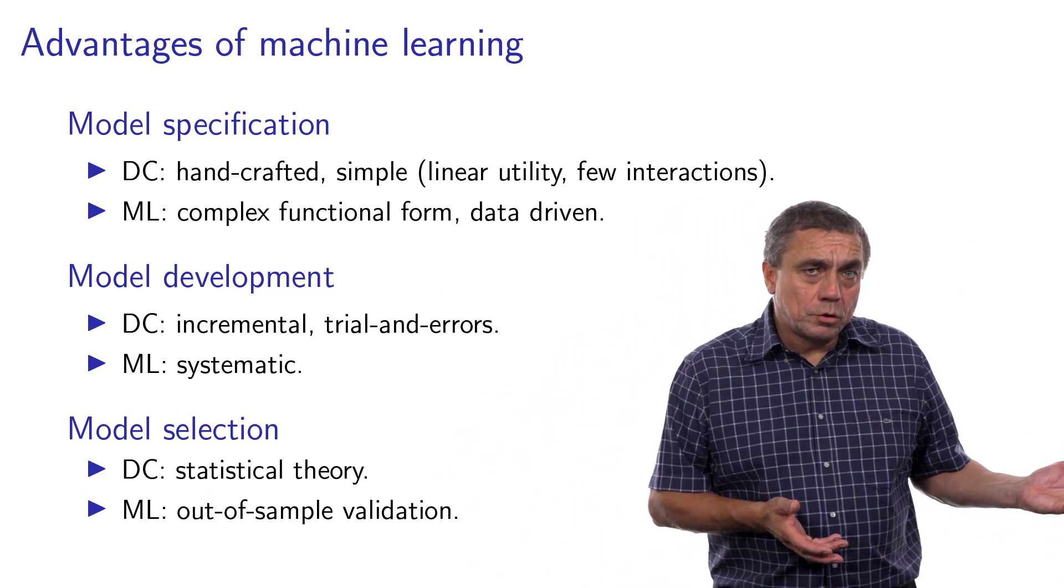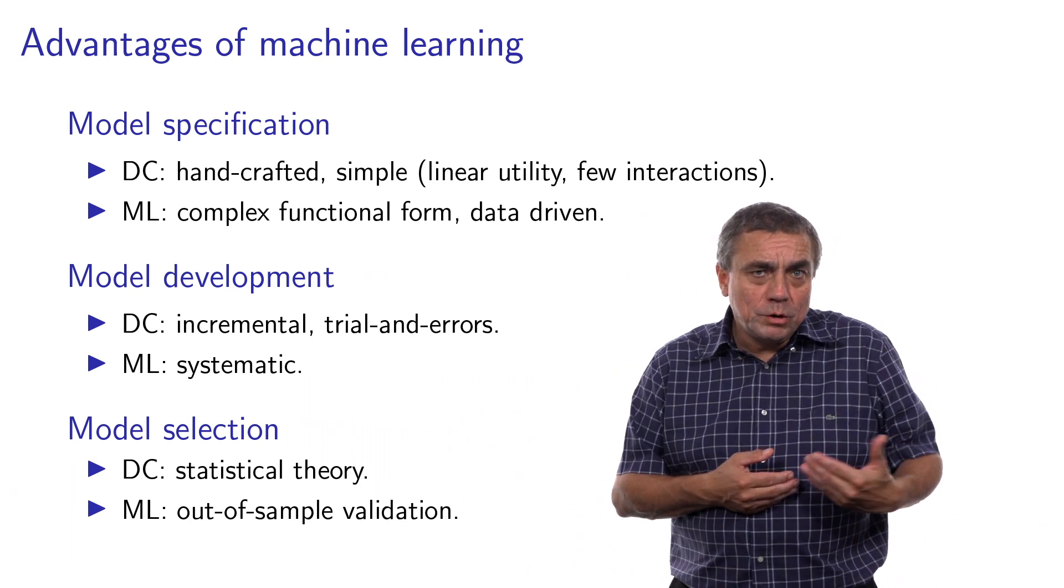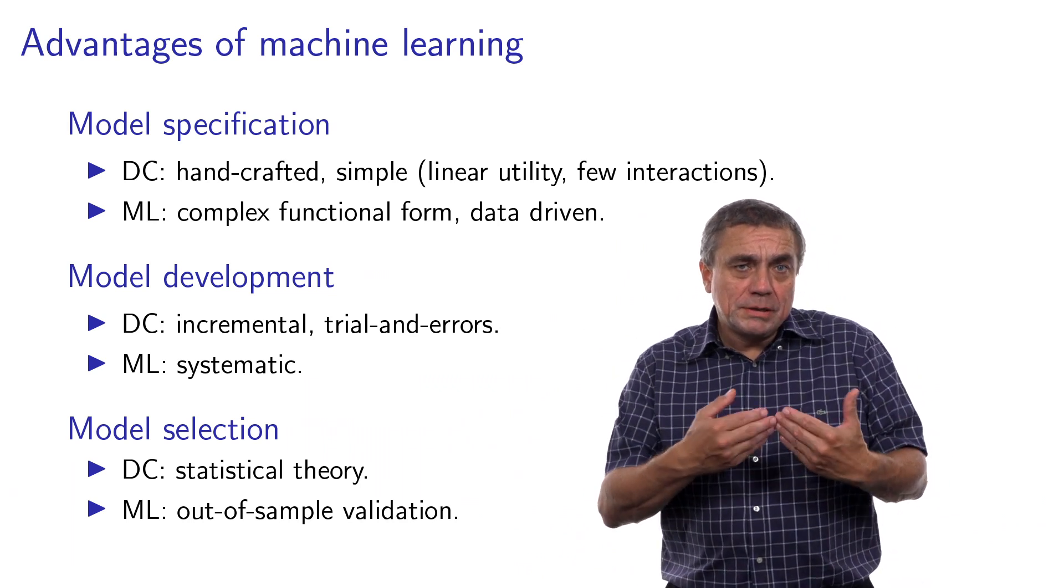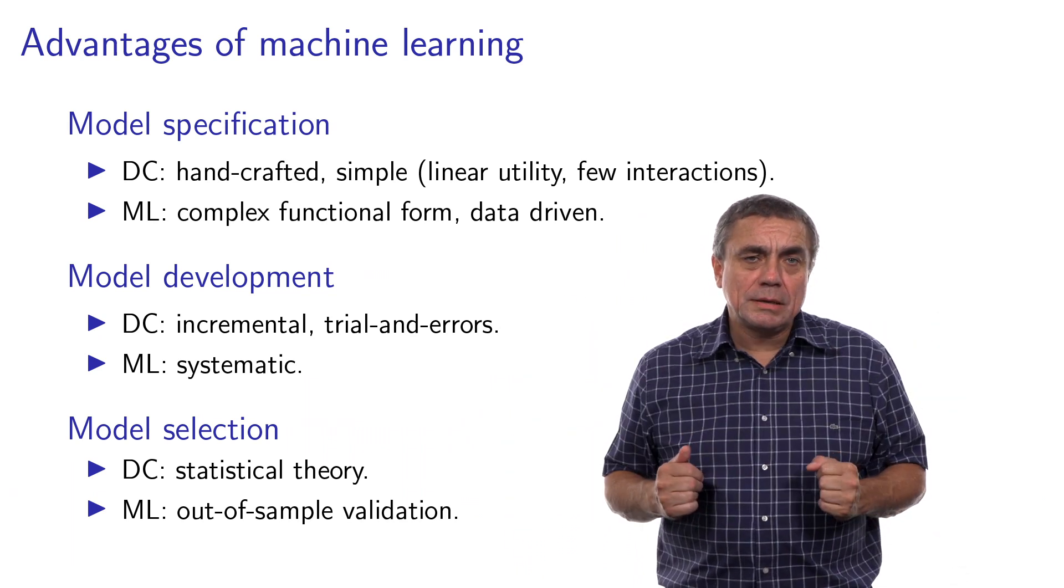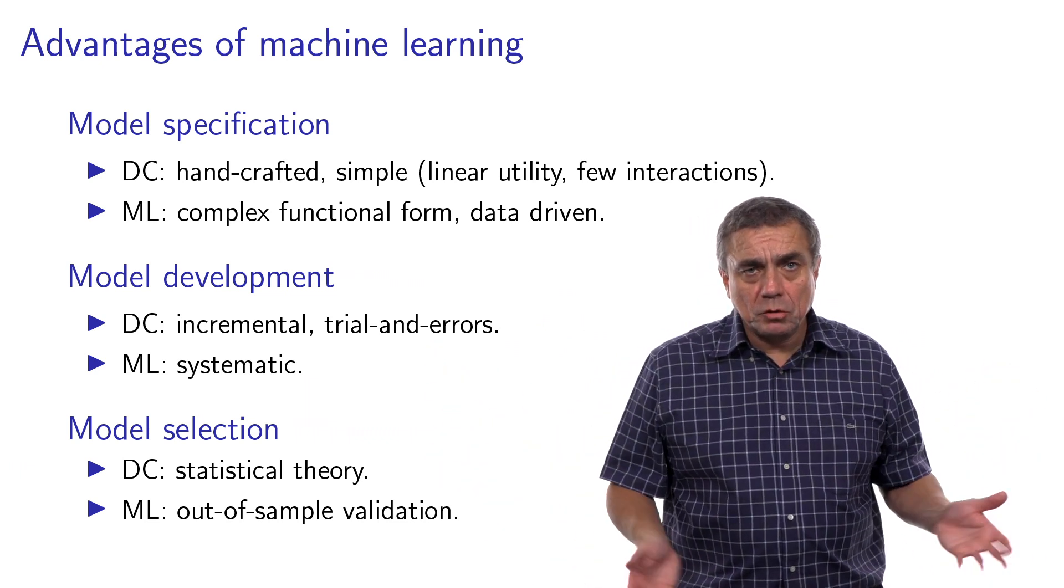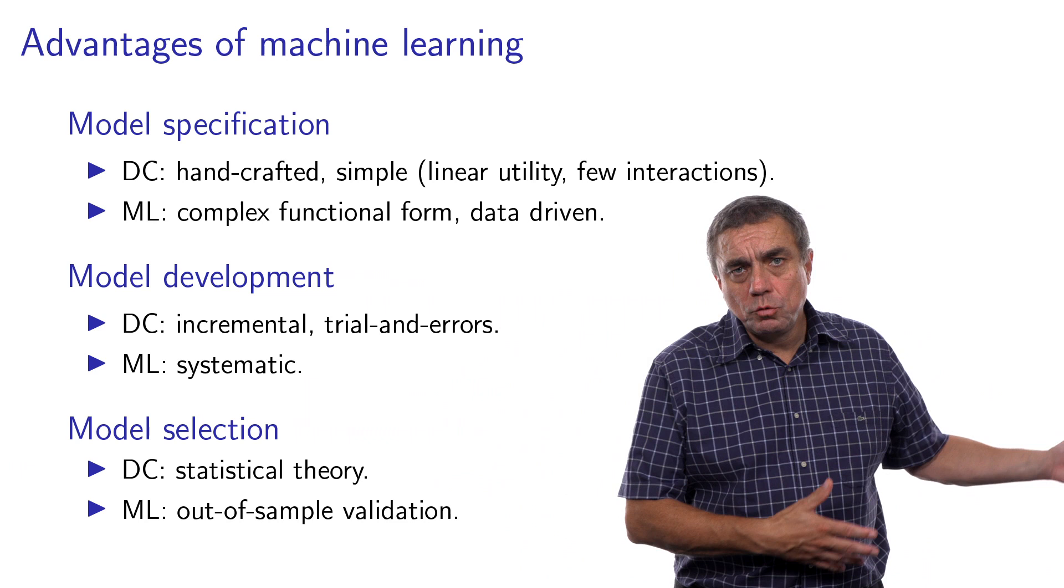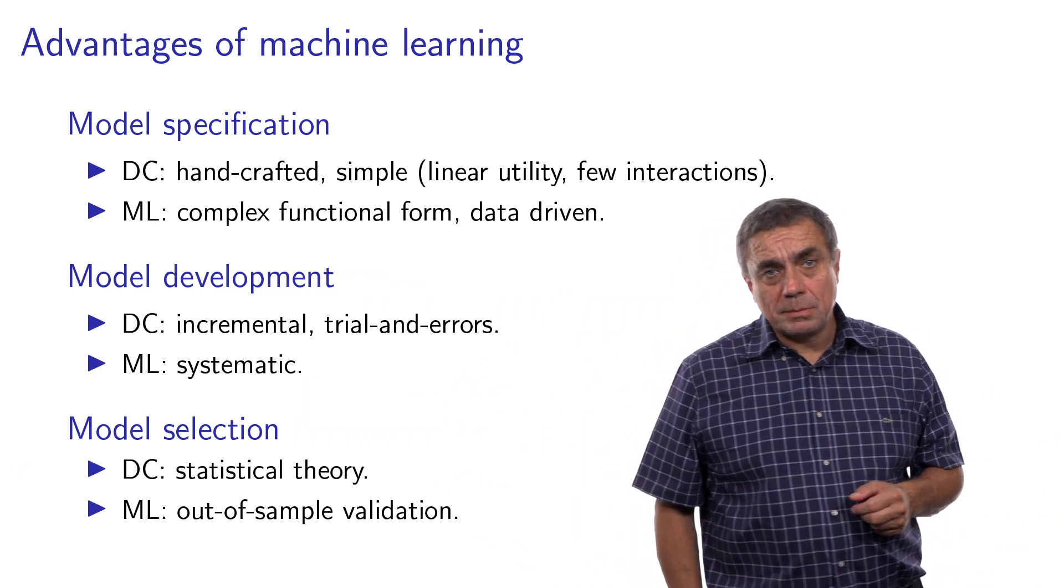In the course of model development, with discrete choice, we do incremental improvement. We do trial and error. We specify a simple model, then we increase the complexity, test the new one, and so on. Machine learning is systematic. You provide the data, you provide the parameters of the algorithm, and everything is done systematically.